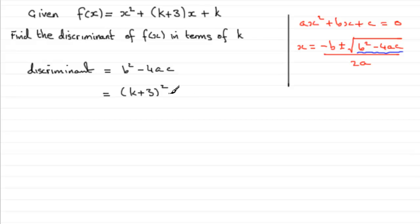And then we've got minus 4 multiplied by a, a being the 1 in front of the x². And then we've got c, c is the constant on the end, k. So that's our discriminant. What we need to do is simplify it.